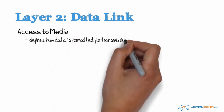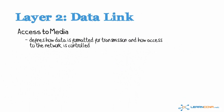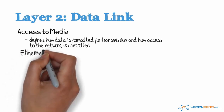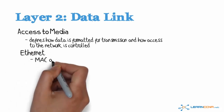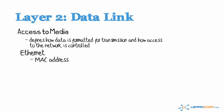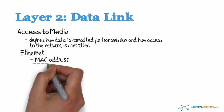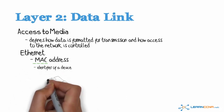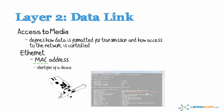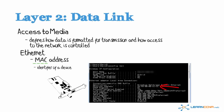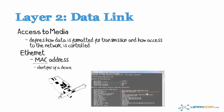The data link layer is concerned with how data is formatted from upper layers for transmission over a given network technology. It is also concerned with how access to the network is controlled. An example is Ethernet, which uses a MAC address, or media access control address. A MAC address is used as the identifier of a device.